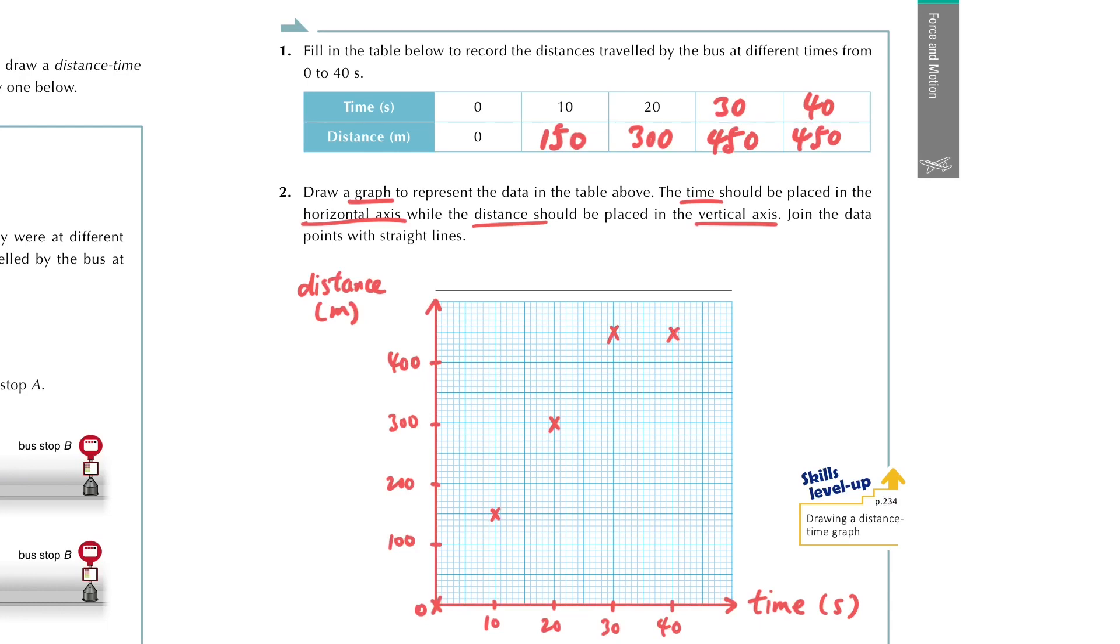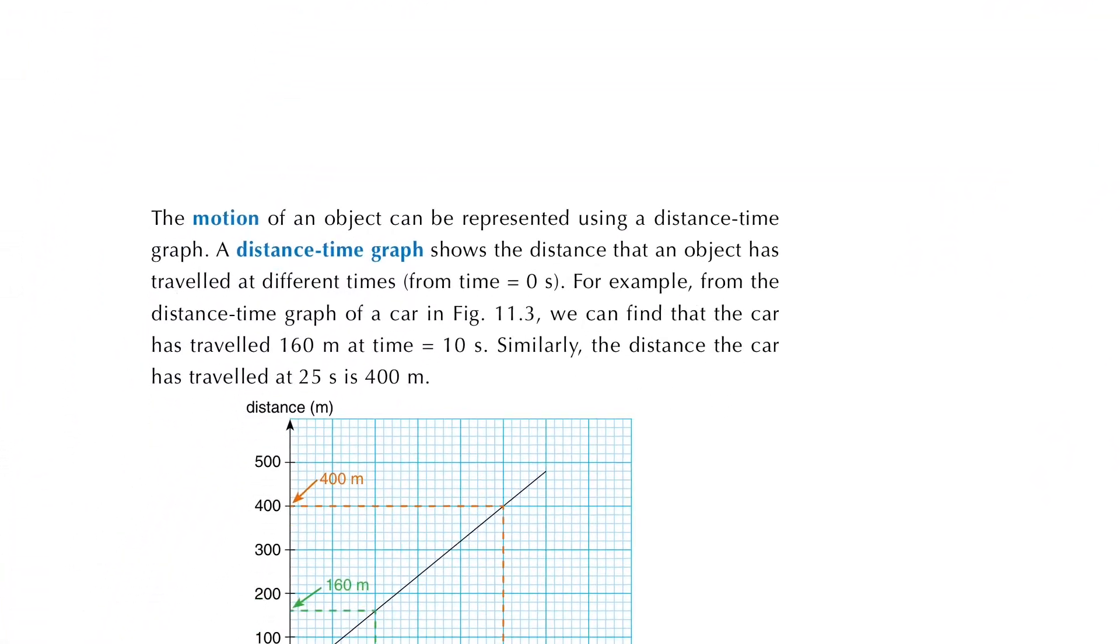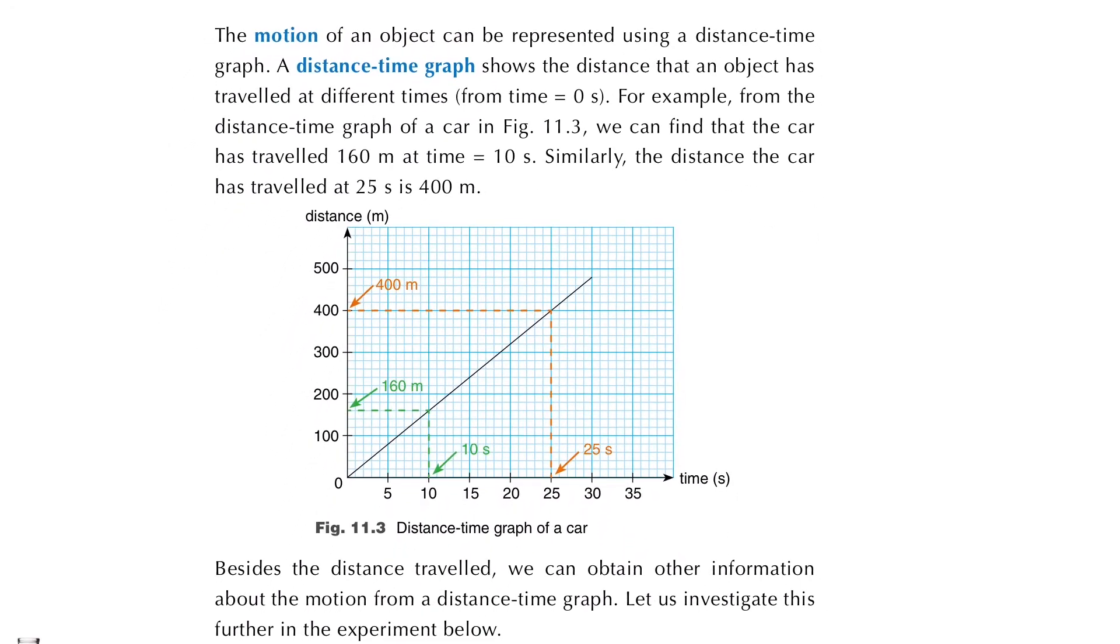And then we can simply connect the data points with straight lines. So we get the distance-time graph of the bus. And we can put the title as the distance-time graph of the bus here. Now this is how we use the graph to represent the motion of the bus. And this is the first important graph about motion.